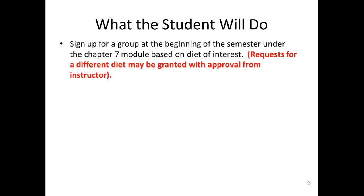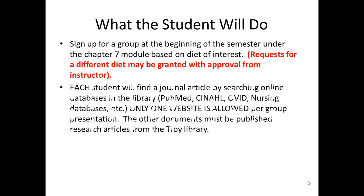So here's what you'll do. Go to Module 7 in the course — this should be done at the beginning of the semester. Scroll through the different diet groups that are available and sign up for a diet of interest. If you have a particular diet that you'd like to present as a group, send me an email and we'll discuss that. Each student will be required to conduct a literature search, and there are several databases that you can use.